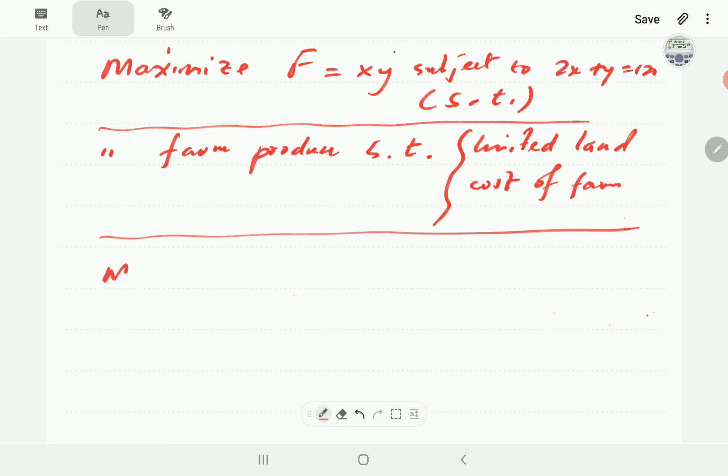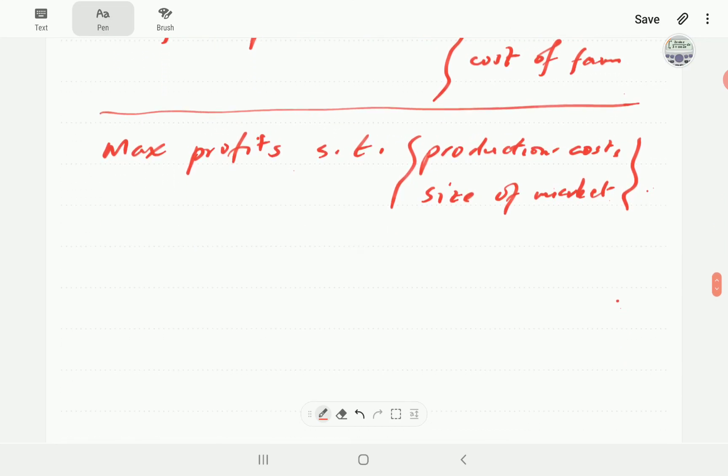In business, we want to maximize profits. And the constraints are going to be production costs, either production costs or costs at which we obtain our raw materials. So those will be examples of our constraints. Other constraints would be the size of the market. So size of the market is a function of where you are. For instance, if you've got a business in a university campus, then the size of your market is the number of students you have on campus.